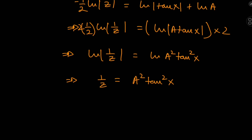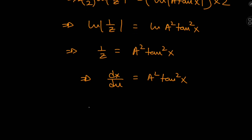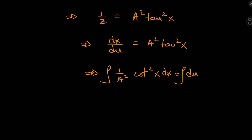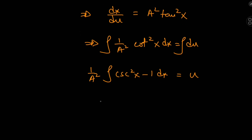Since z = u', we now have a separable equation in u and x. Writing it as (1/a²)·cot²(x) dx = du and integrating, the left side uses the identity relating cot²(x) to csc²(x). The antiderivative of csc²(x) is −cot(x), giving us c·(−cot(x) − x) = u, where c = 1/a².